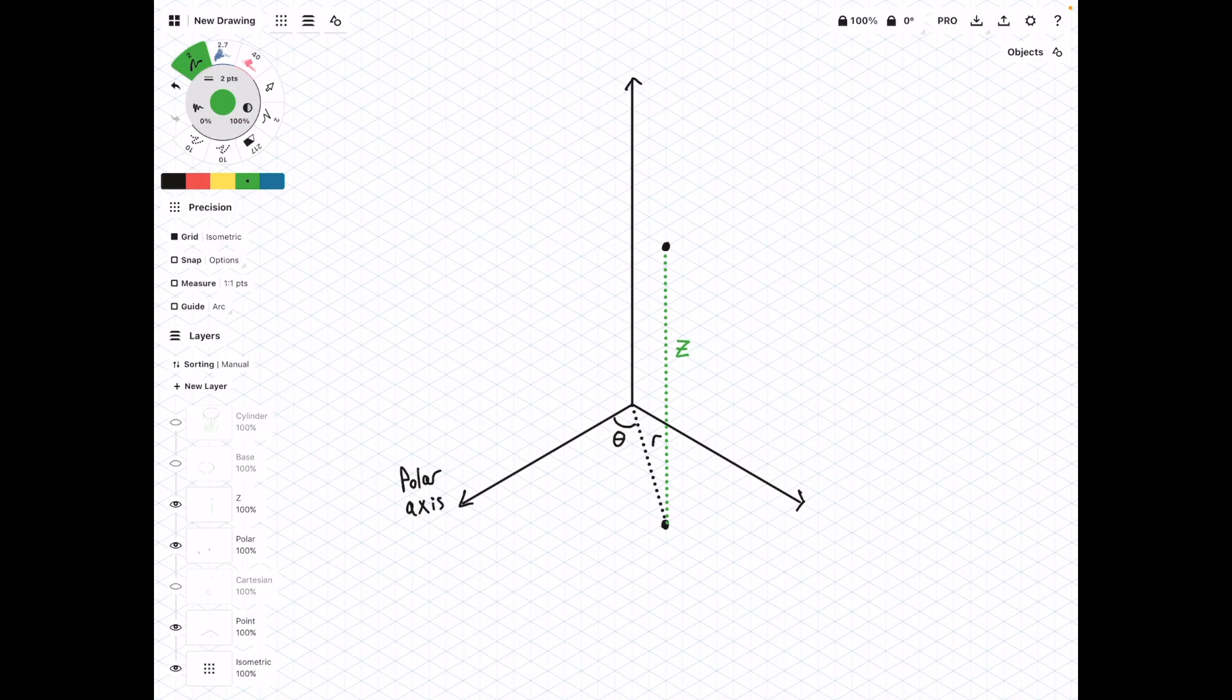If I add the Cartesian coordinate system back, you'll see that both of these systems share this z value here. There's no special difference between the two, and really when we get to the final formulas, you'll see that there is no conversion. z equals z. But for now, I'm going to hide the Cartesian coordinate system, and we're going to look into why this is called the cylindrical coordinate system.